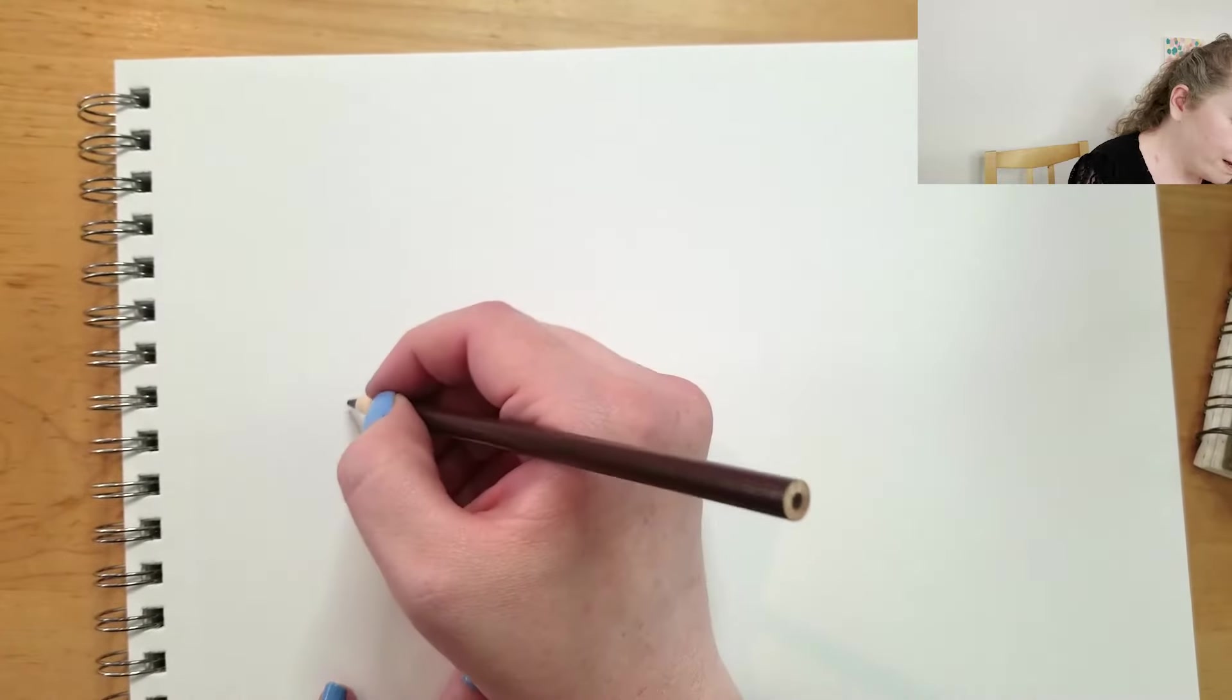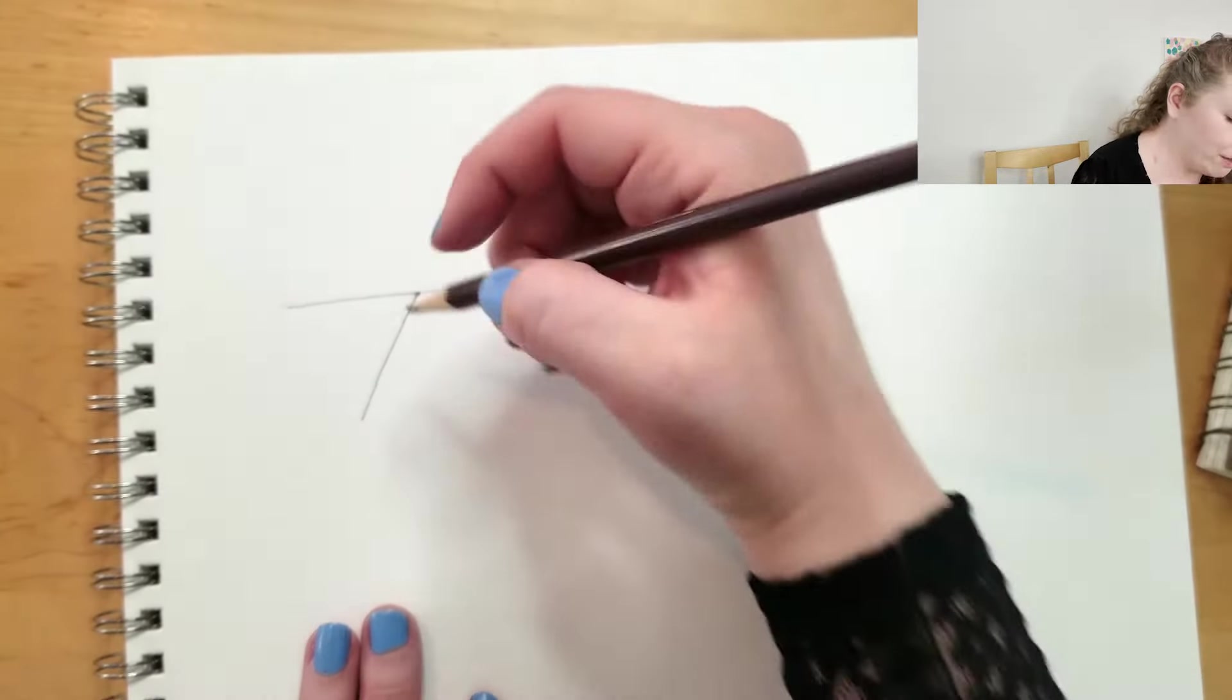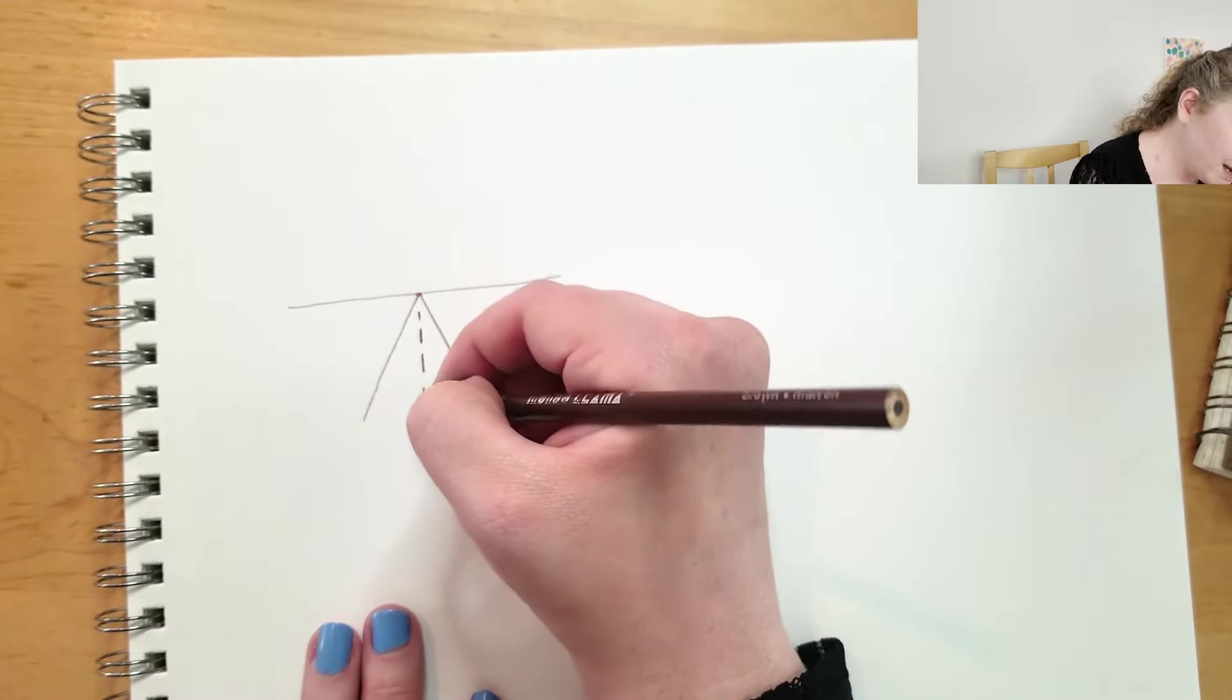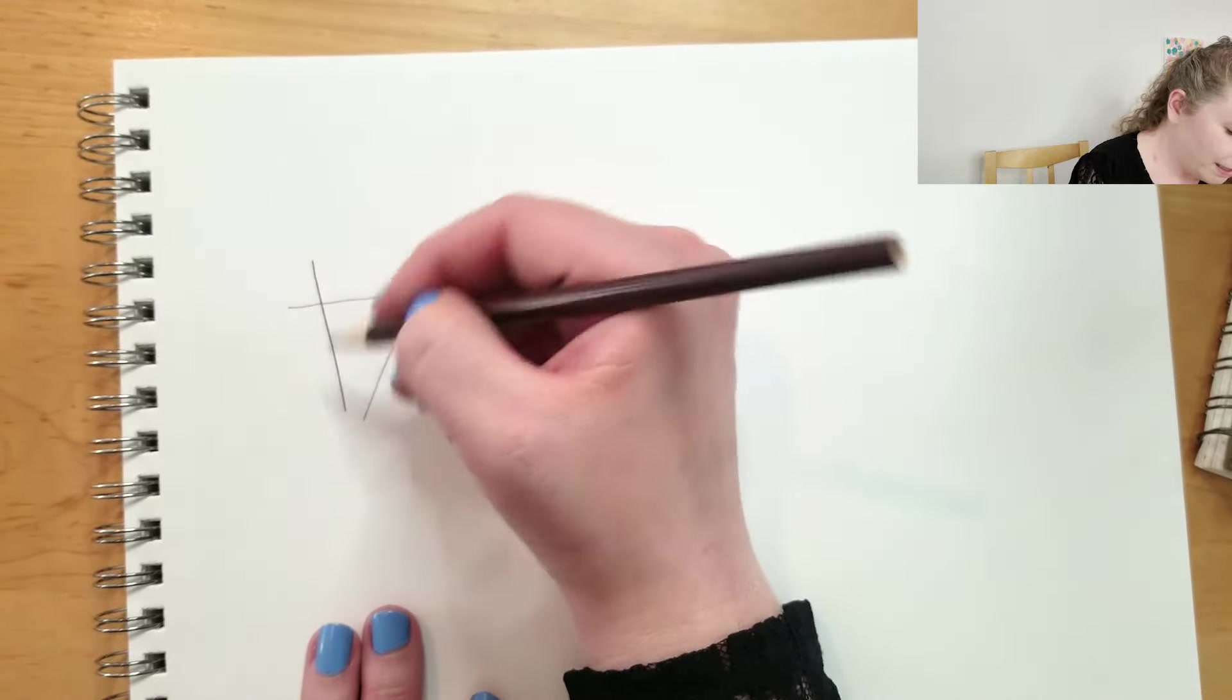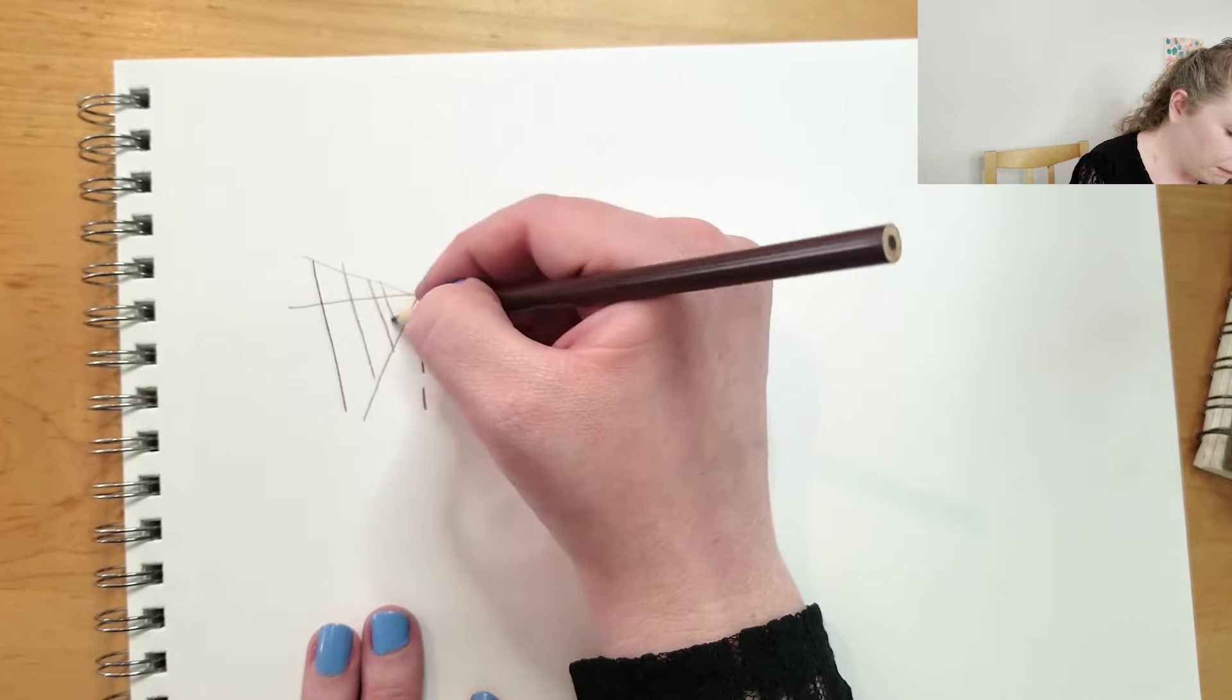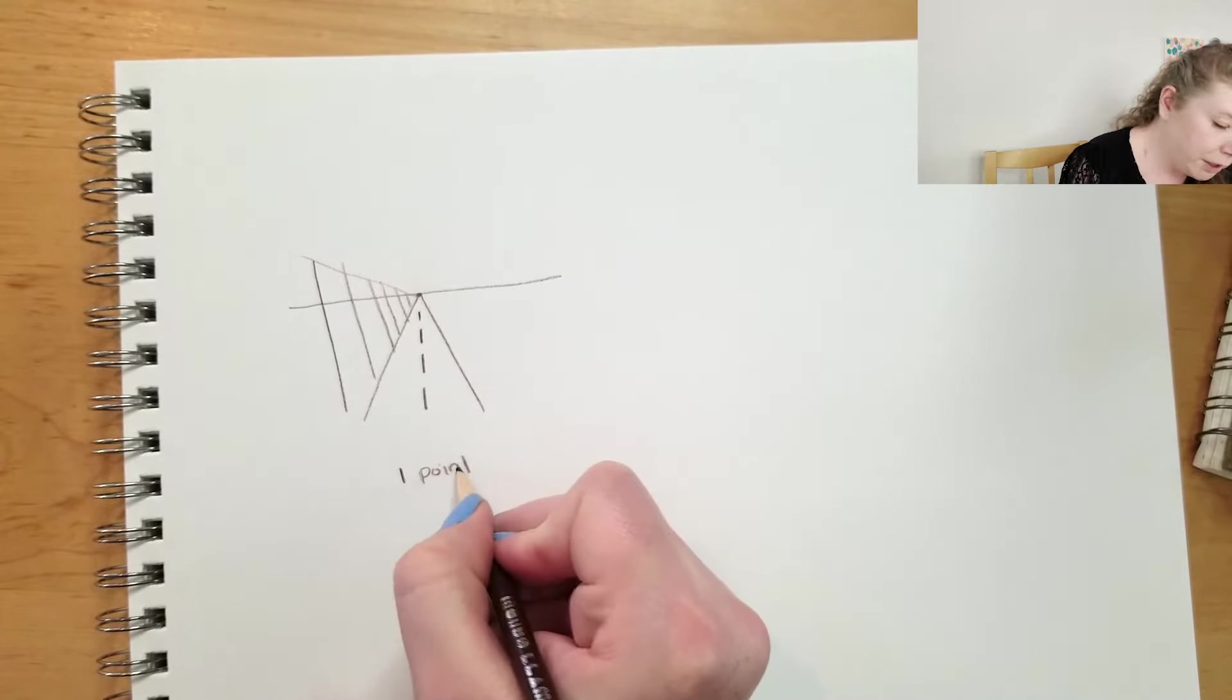The first one is one-point perspective and basically that means that you have a horizon line. You have one point that everything recedes to. Like if you're standing down a street and you see the road appears to converge in one spot and you might also notice that things tend to get a little closer together and also smaller as they go. That is one-point perspective.